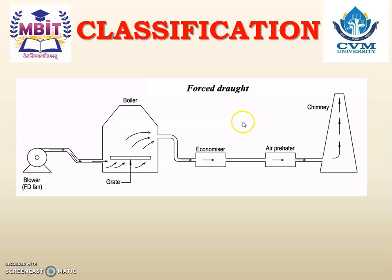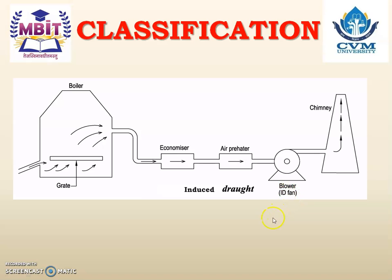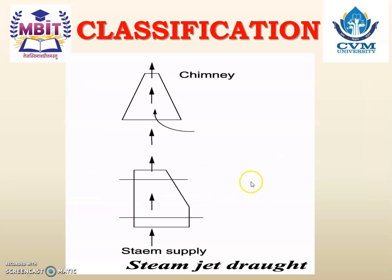In an induced draft boiler, an ID fan is placed at the bottom of the chimney and sucks air from the air preheater, economizer, and boiler. In a steam jet draft boiler, steam is used to throw air and gases out. These are all types of artificial draft boilers, with mechanical draft further classified as induced draft, forced draft, and balanced draft.